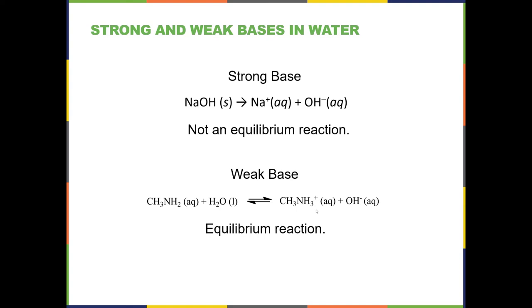After water loses its proton, what's left is OH⁻. Water lost H⁺ — it didn't just lose H, it lost H⁺ — so now the remaining species has an extra electron and a negative charge. Just like in the weak acid case, this is an equilibrium reaction that does not go to completion. If you start with 1 mole of methylamine in a liter of water, you will not end up with 1 molar OH⁻.